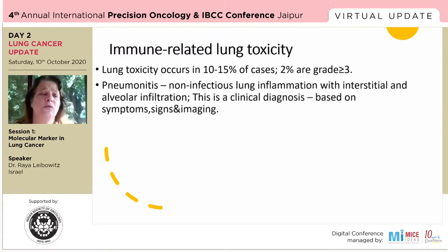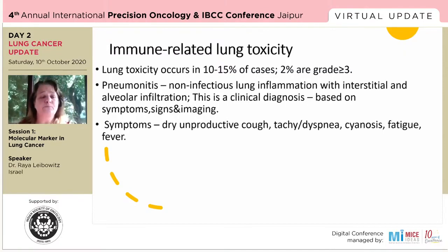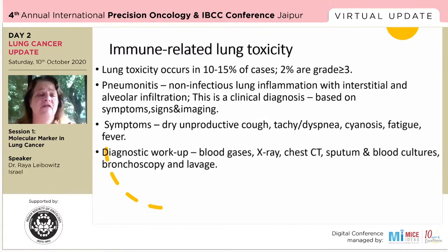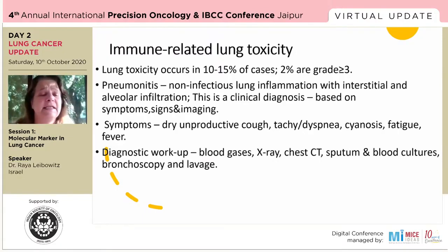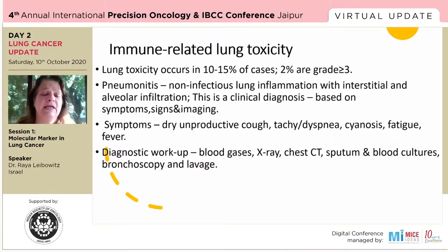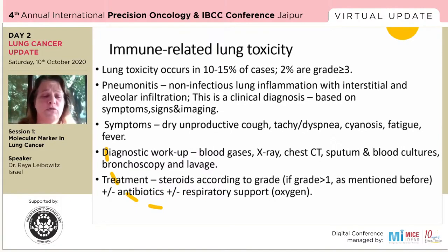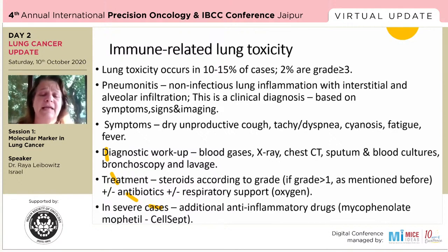Lung toxicity: the most common is pneumonitis, though it's not the only possible type. It manifests mostly as dry unproductive cough, tachypnea or dyspnea, cyanosis, fatigue, and fever. We want to recognize it at the stage of dry cough. It's a clinical diagnosis — you could have a normal chest X-ray or patchy infiltrates. Bronchoscopy and lavage are done only when clinics are not straightforward. Treatment is steroids according to grade, and in severe cases additional anti-inflammatory drugs such as mycophenolate or anti-TNF antibodies.